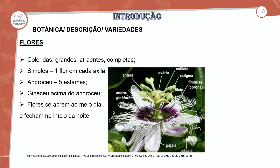Uma peculiaridade em relação às outras culturas é a estrutura dessa flor. Observem na imagem: onde ficou o ovário, bem acima está o gineceu, com o estilete e as anteras — a parte feminina. O androceu está abaixo da região de fecundação, garantindo que a autofecundação não seja realizada. Para que ocorra a fecundação, precisamos de um agente polinizador, o que favorece o desenvolvimento, a variabilidade do fruto, o tamanho do fruto e a quantidade de polpa.